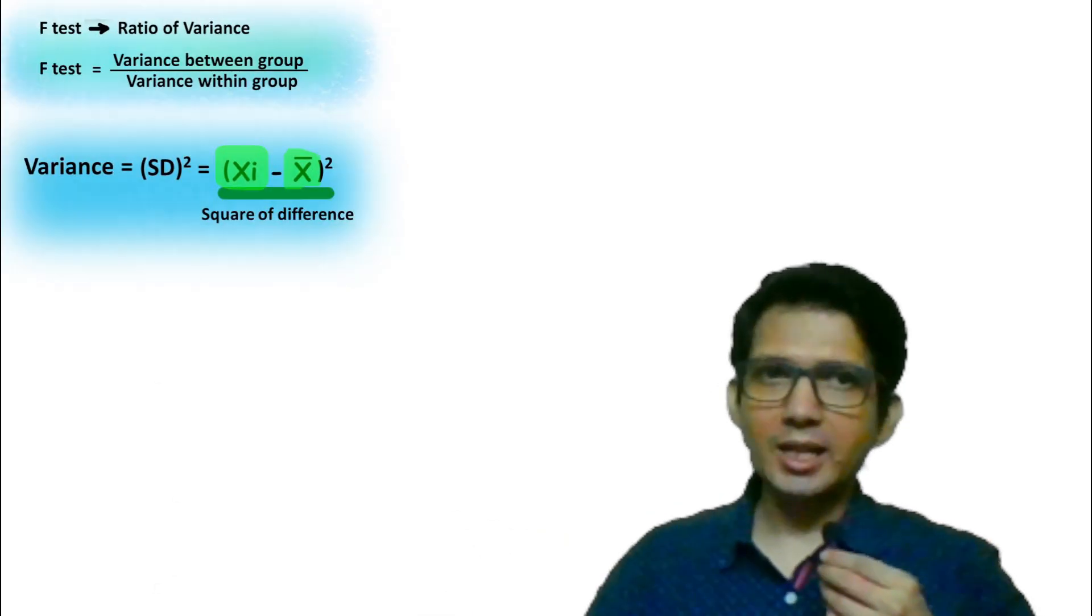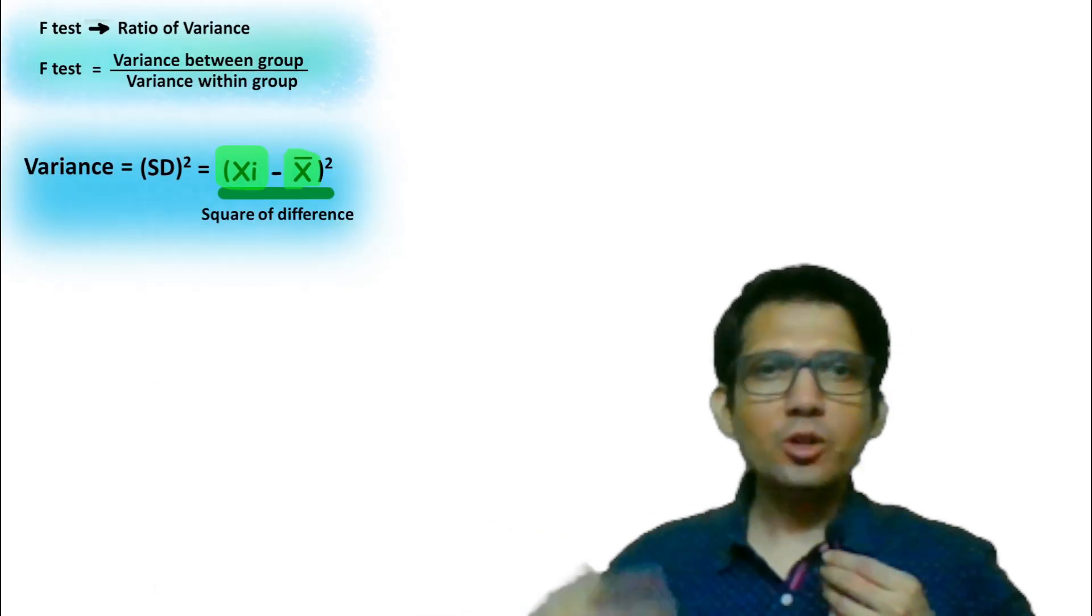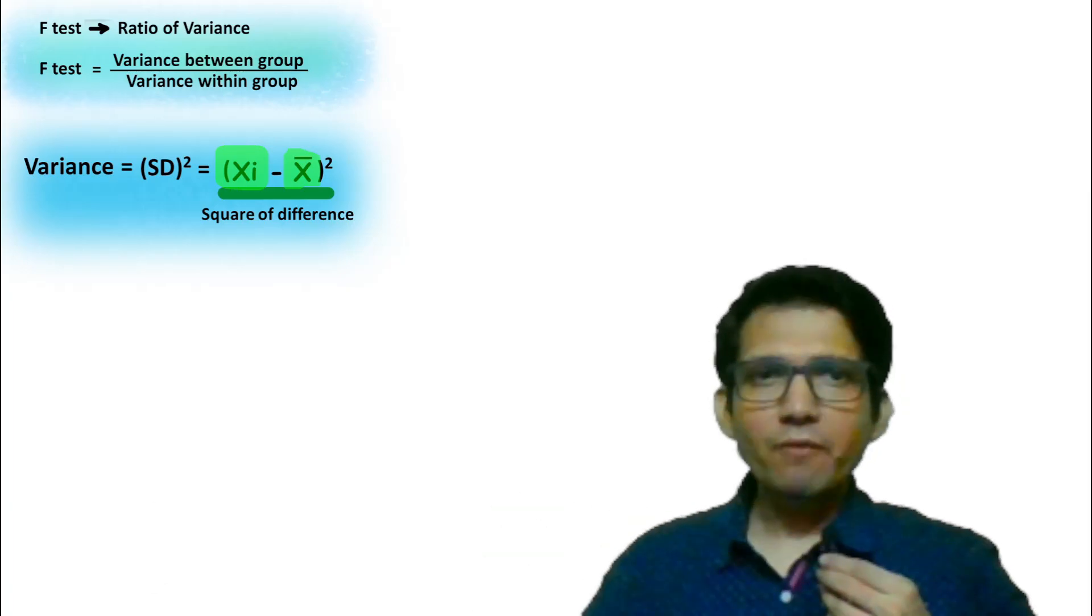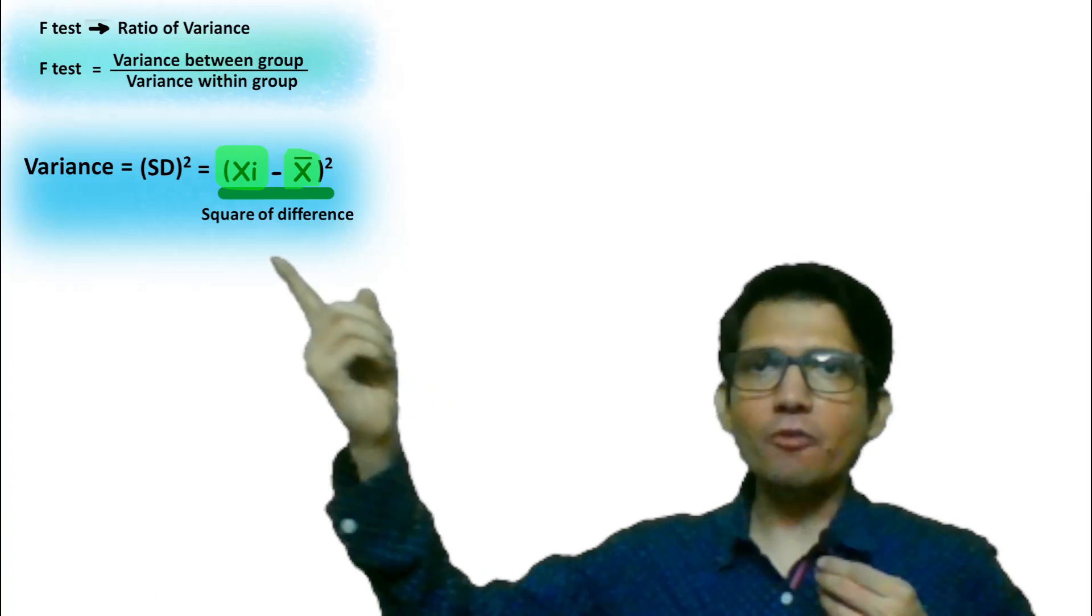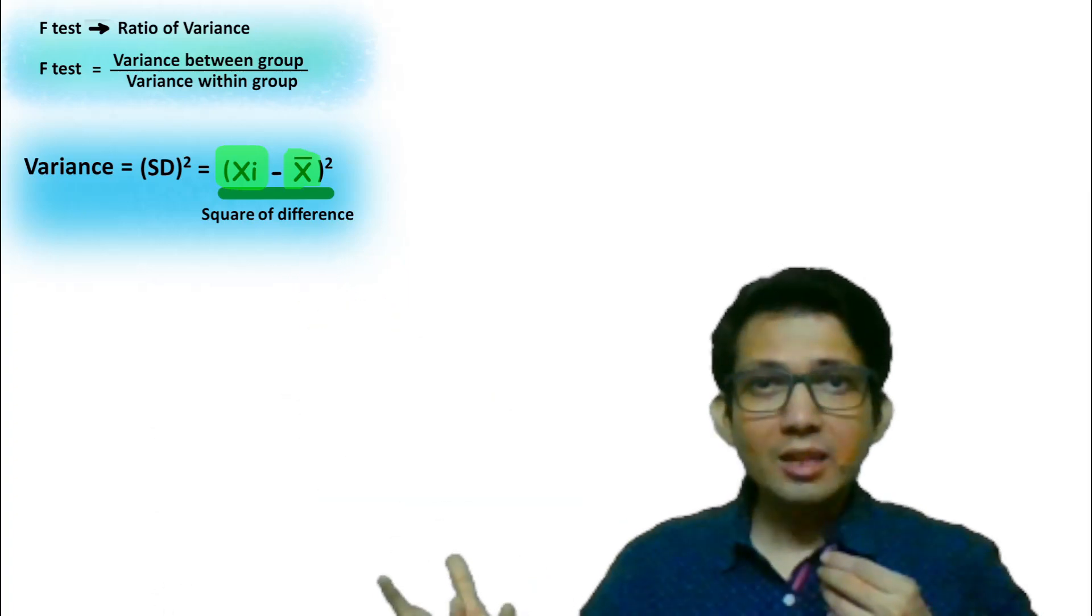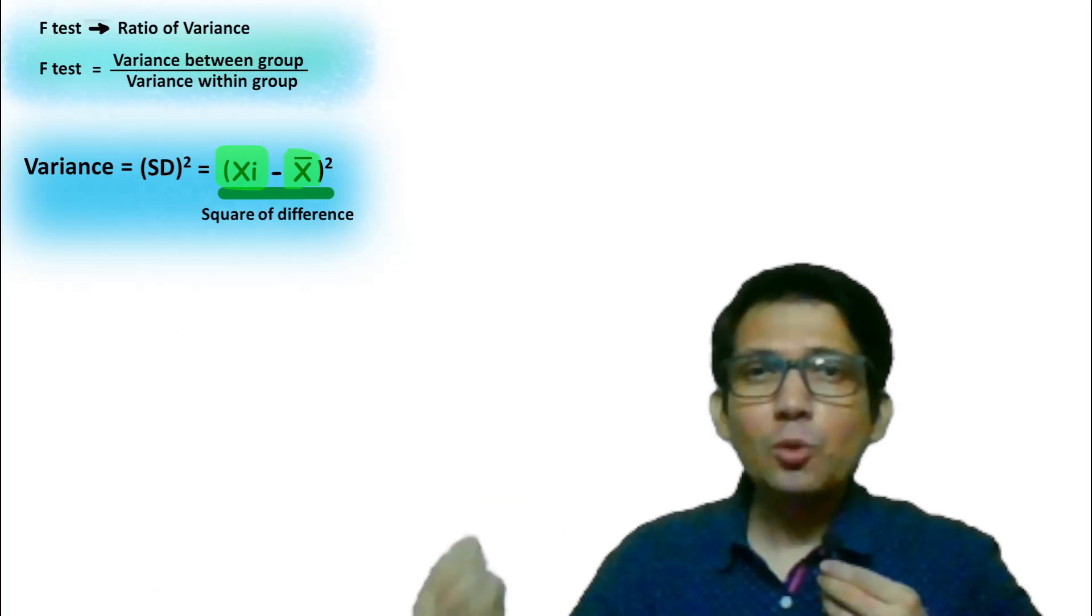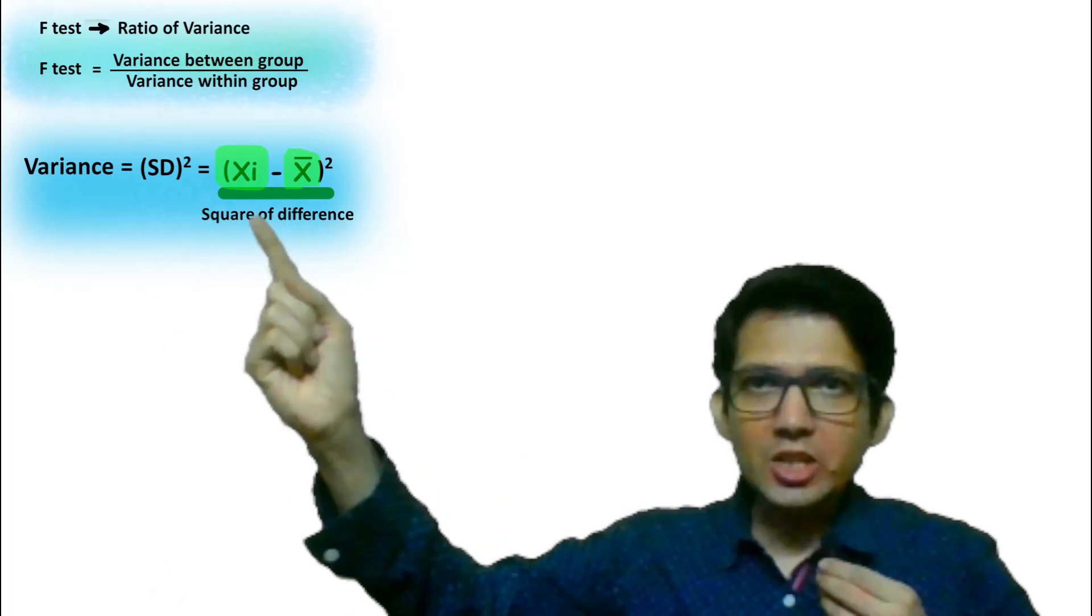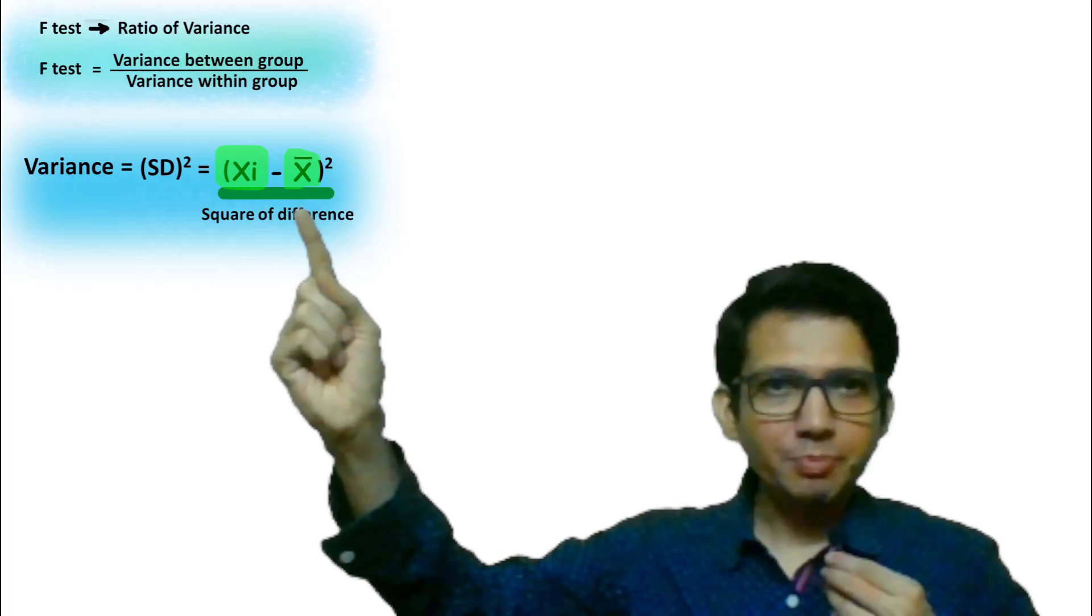Let's see the summary of Placket-Burman analysis. It is based on F test which is a test of variance where variance is a square of standard deviation. What is standard deviation? It is the square of a difference - difference of each observation with respect to average.